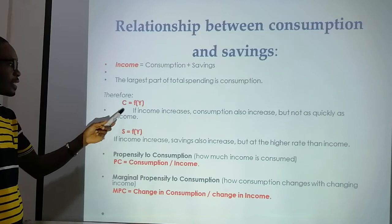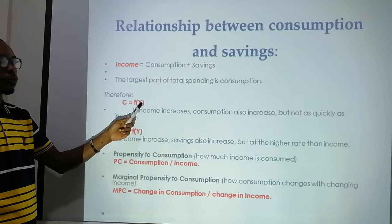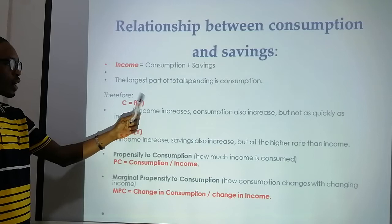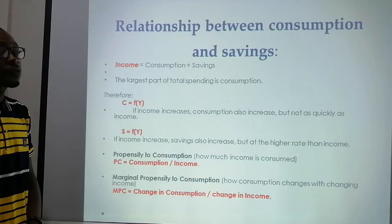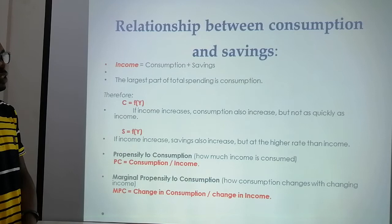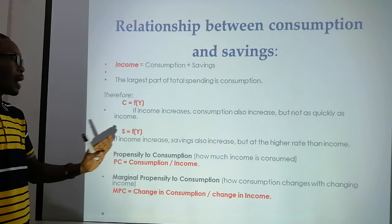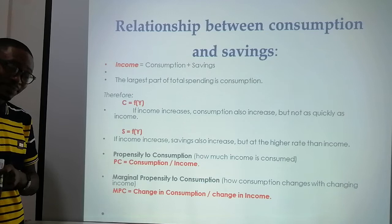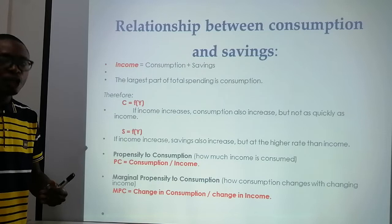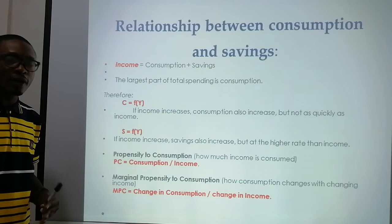The consumption equation is: C = f(Y), where f is a constant and Y is your income. This explains that if income increases, consumption also increases, but not as quickly as income. Your income will not increase daily, but consumption always increases. Whenever your income increases, your tastes and preferences also increase — for example, if you were in a single room earning 700 cedis a month and then get a new job paying 2,000 cedis, you may prefer a chamber and hall.